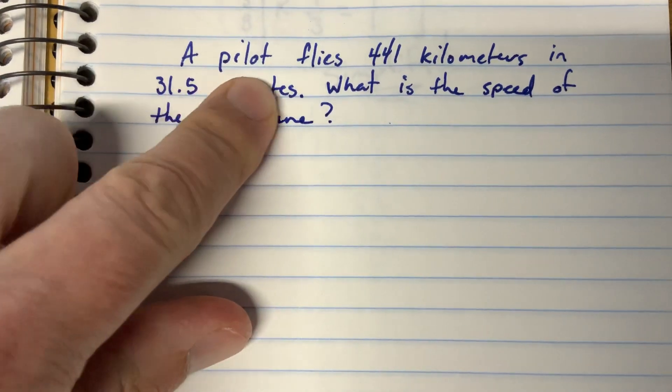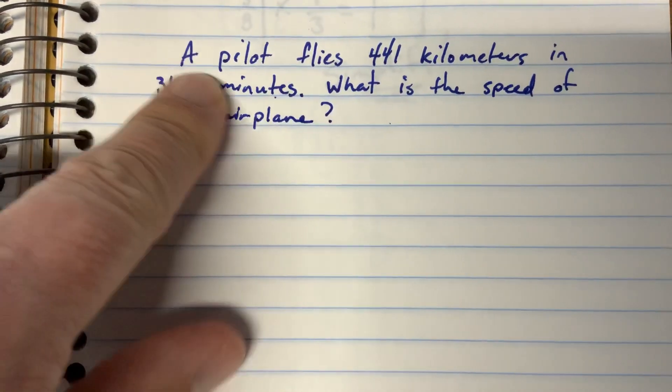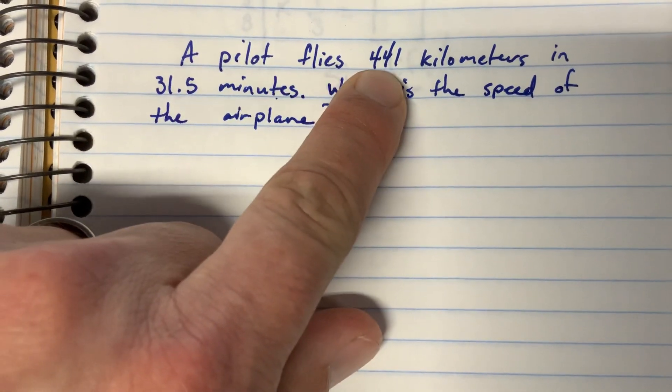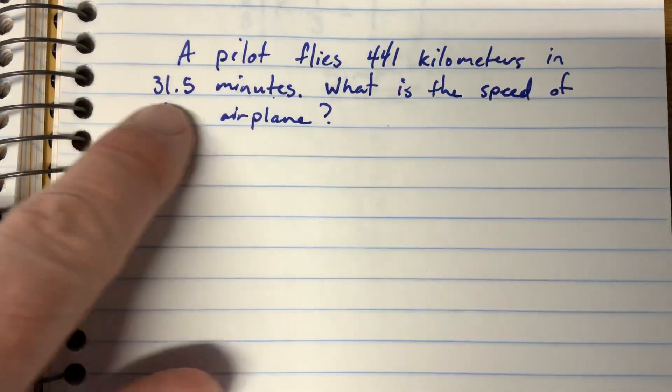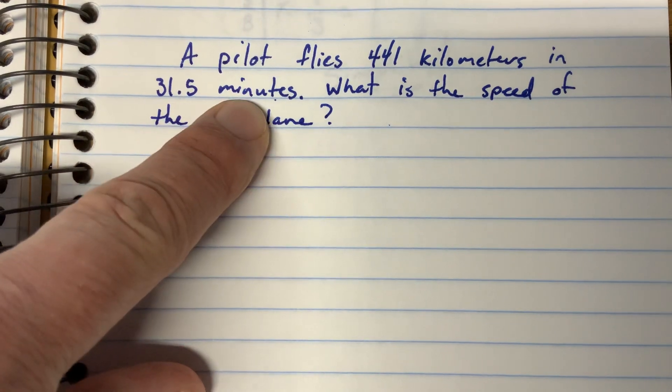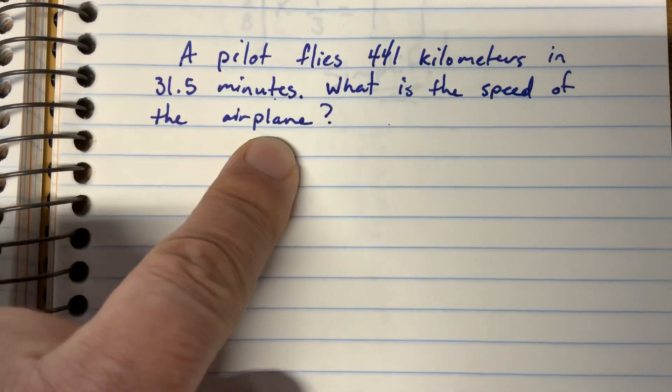Our next problem has a pilot in it and a pilot flies planes. So a pilot is flying 441 kilometers in 31 and a half minutes. What is the speed of the airplane?